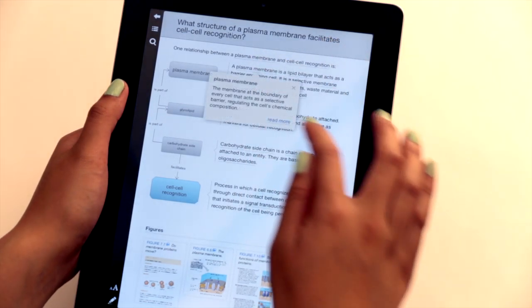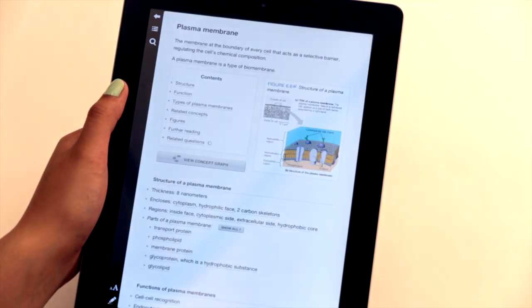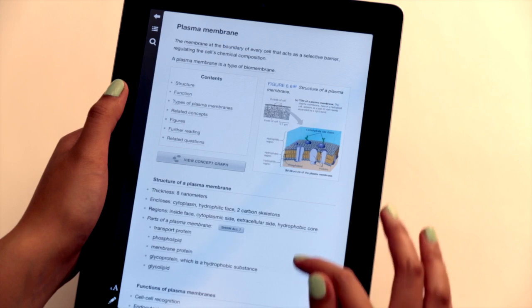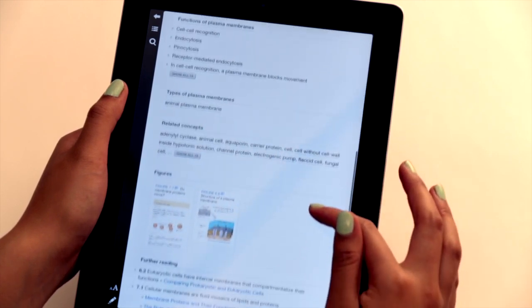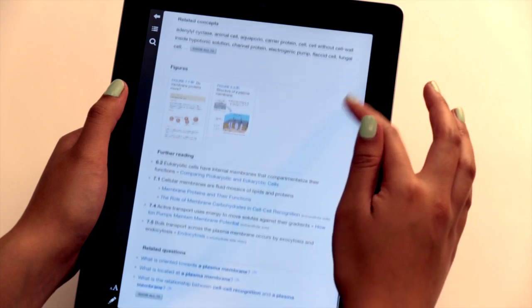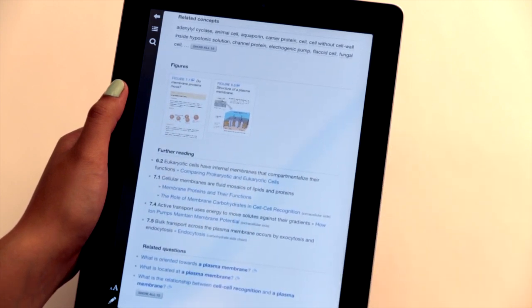Linked from the text and from every answer are Inquire's Wikipedia-like glossary pages, which summarize everything I need to know about a concept. Because the AI generates these pages from the knowledge in the book, I'm never overwhelmed with unnecessary details.